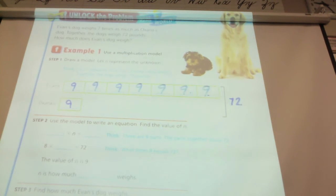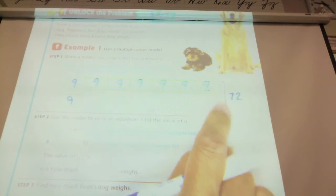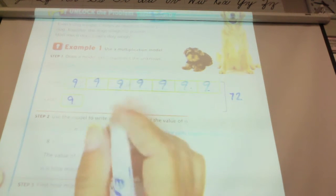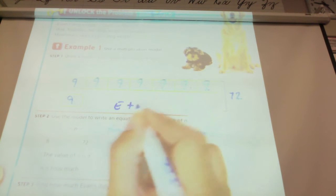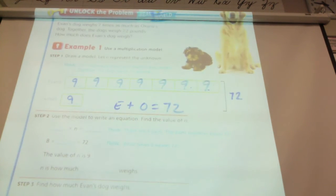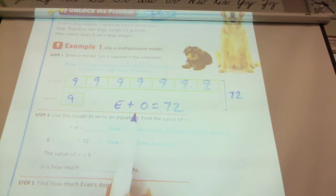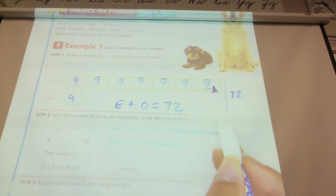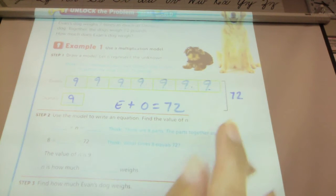And where you guys can make mistakes on this is you will see 7 boxes and you're going to try to divide that into 72. What you have to remember is it's Evan's dog's weight plus Oksana's dog's weight that equals 72.